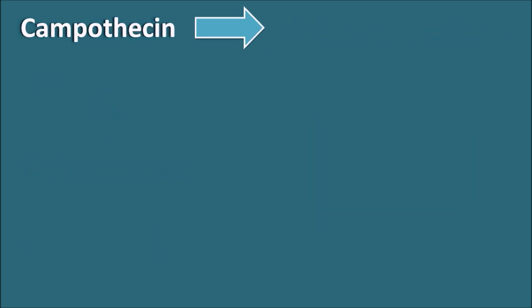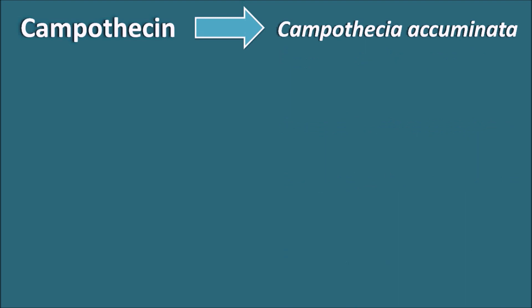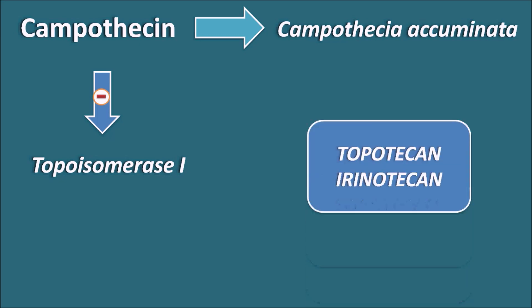Next is camptothecin, coming from Camptothecia acuminata. Camptothecin inhibits topoisomerase-1, which is important in DNA replication, and thus acts as an anticancer agent. Two synthetic derivatives, topotecan and irinotecan, are related to camptothecin and also inhibit topoisomerase-1, finding use in the treatment of cancer.